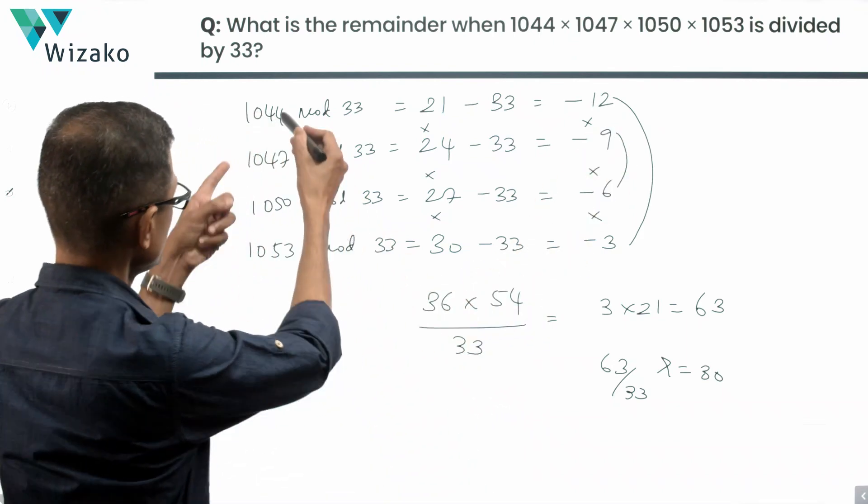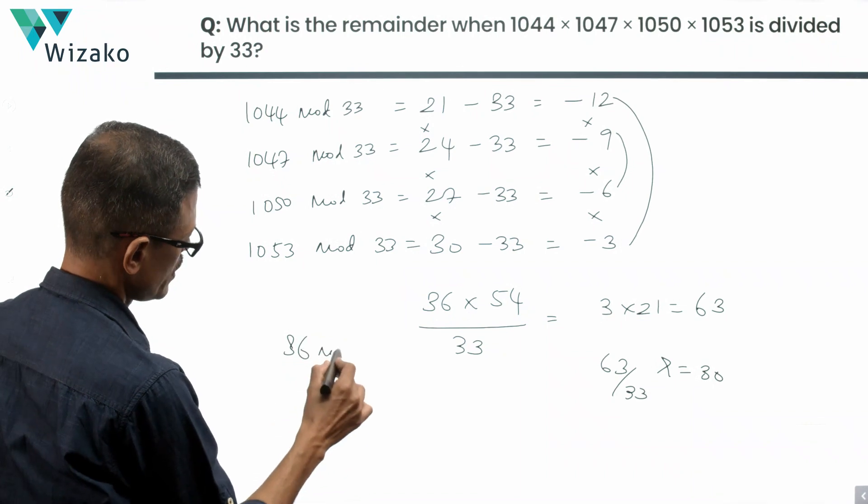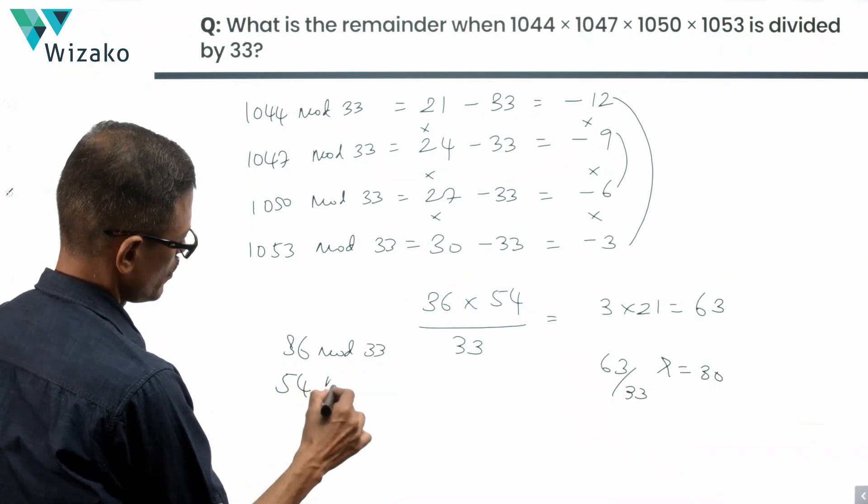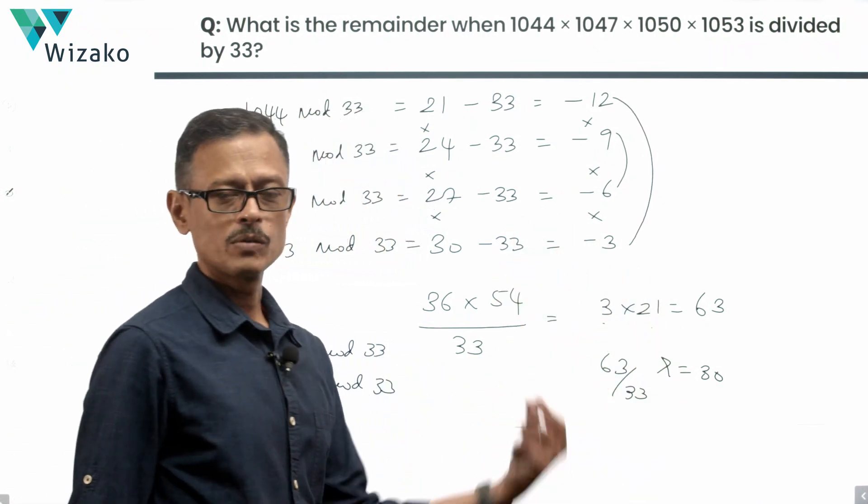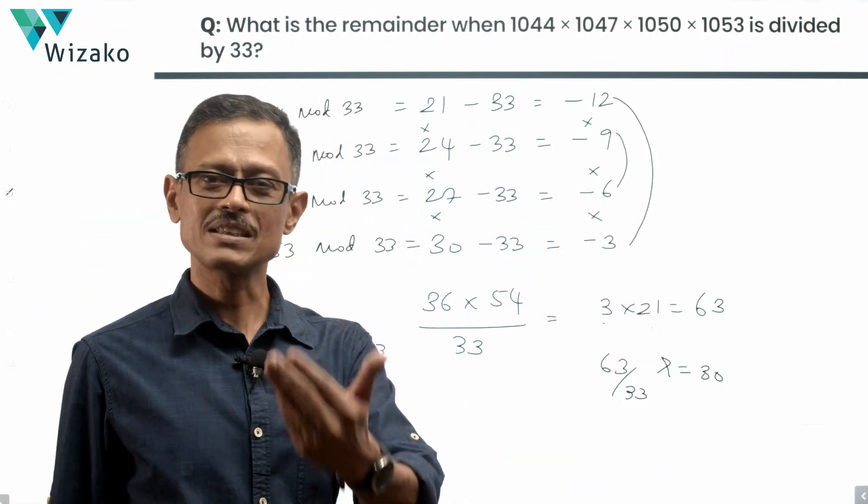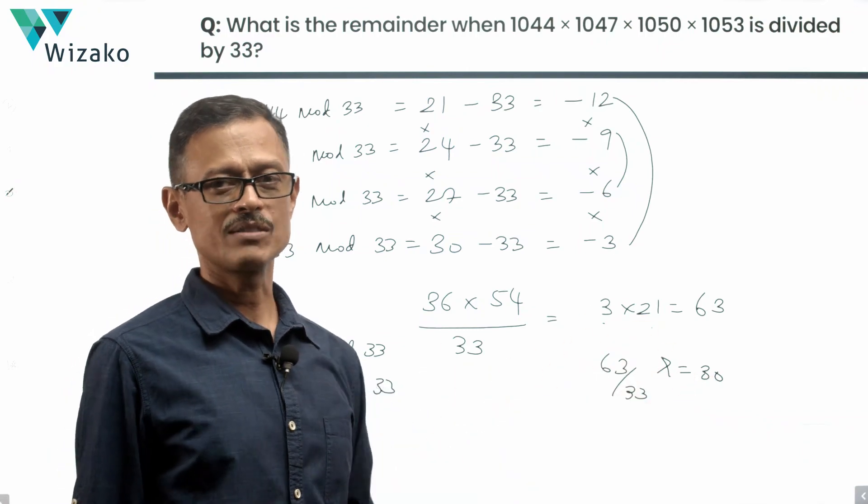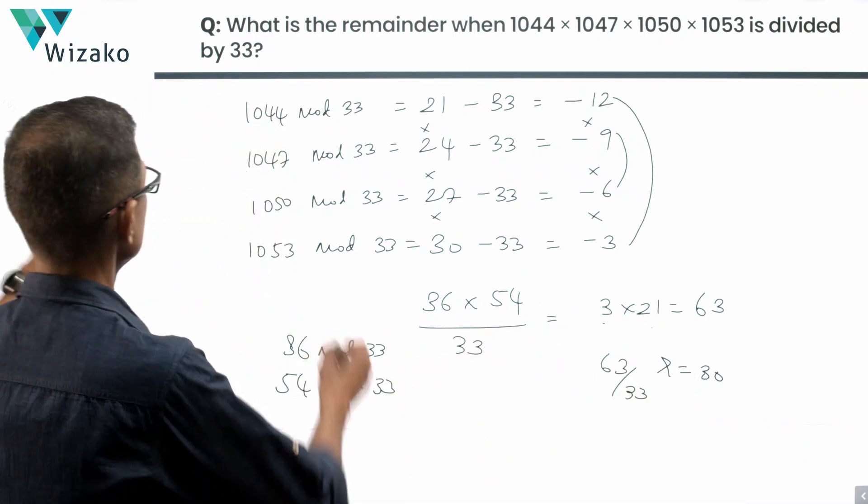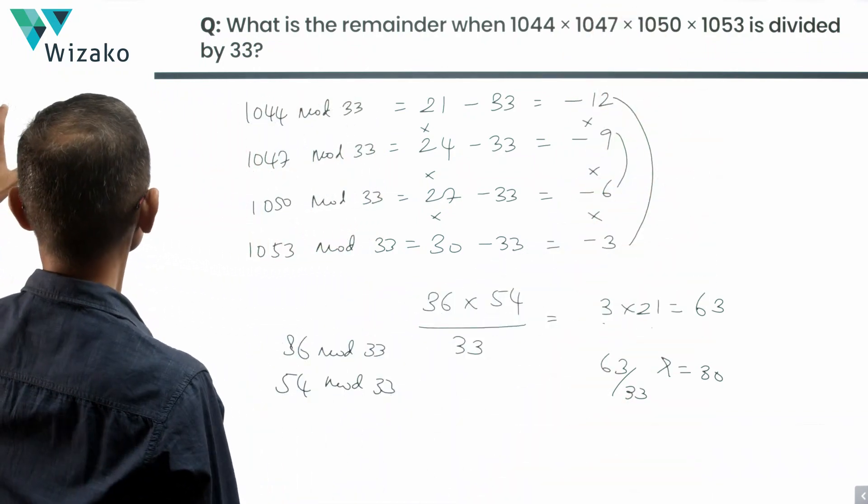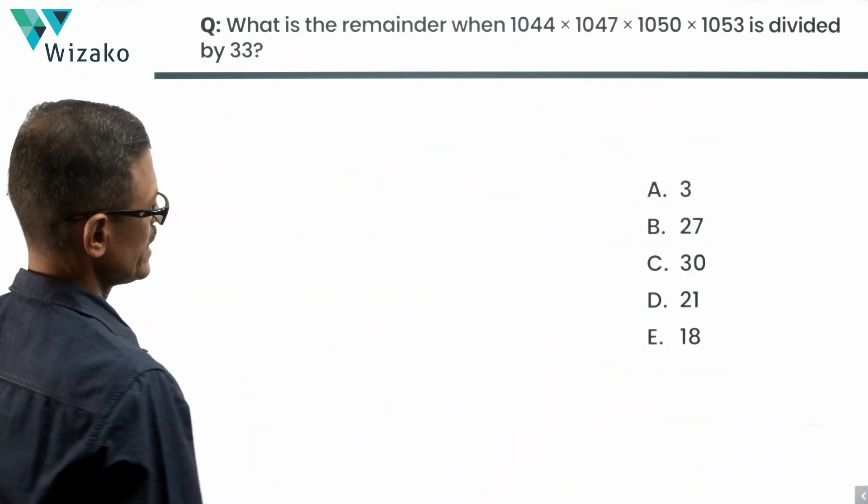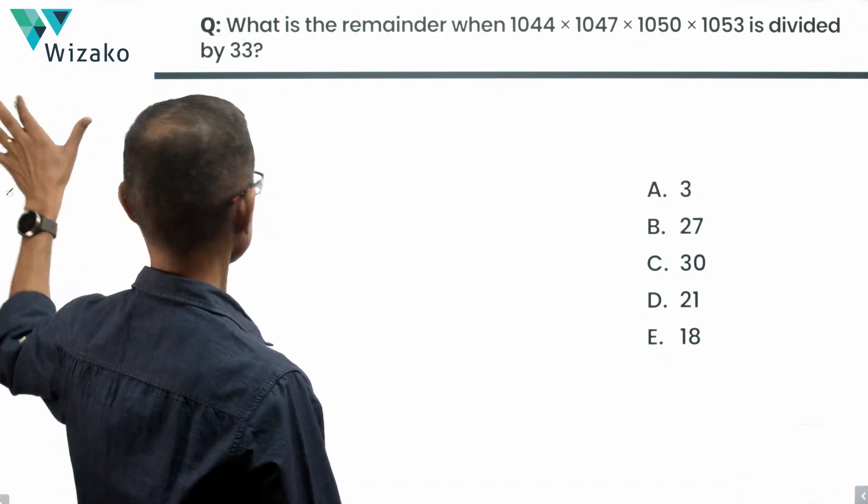Here again, I'm going to do what we did before. 36 mod 33 is 3, and 54 mod 33 is 21. The product of these two is 63. 63 by 33 gives a remainder of 30. So the final remainder when 1044 times 1047 times 1050 times 1053 is divided by 33 is equal to 30. Choice C is the correct answer to this question.